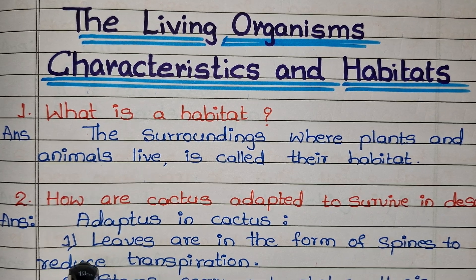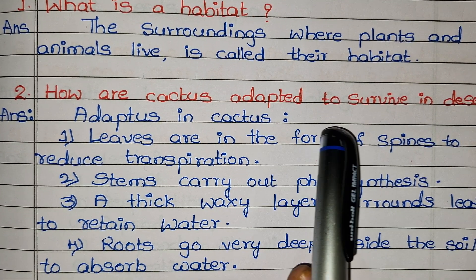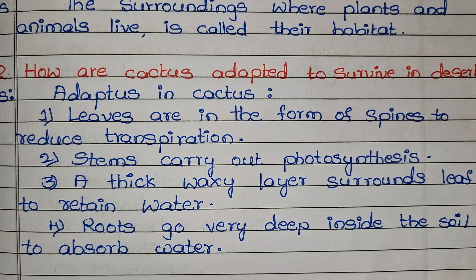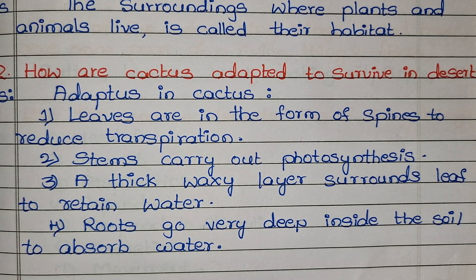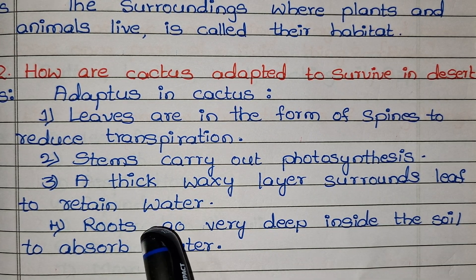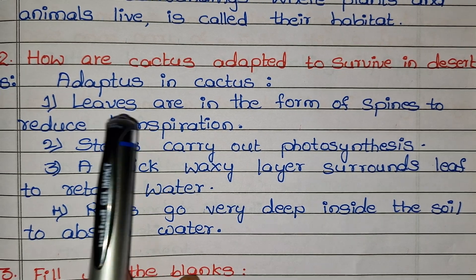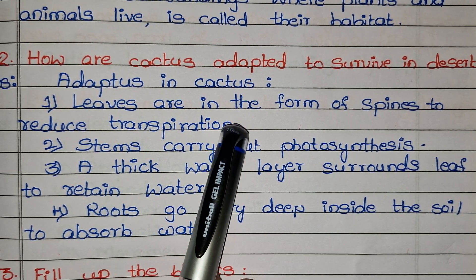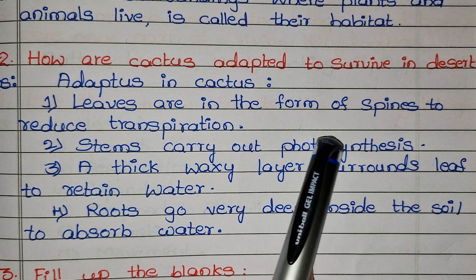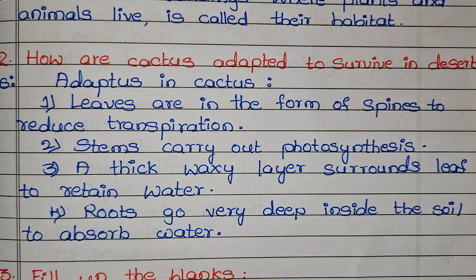The next question is: how are the cactus adapted to survive in the desert? The adaptations in the cactus are: the first is, leaves are in the form of spines and reduce transpiration.